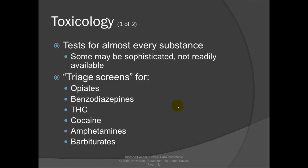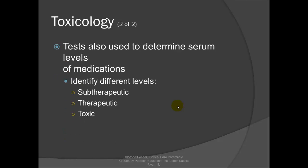Urine can also be used for toxicology, testing for almost every substance. However, designer drugs like K2 and bath salts currently have no standard screenings available — some may be done at sophisticated labs but are not readily available. Standard triage screens test for opiates, benzodiazepines, THC or marijuana, cocaine, amphetamines, and barbiturates. Urine tests are also used to determine serum medication levels — whether the patient is subtherapeutic, therapeutic, or in the toxic range.